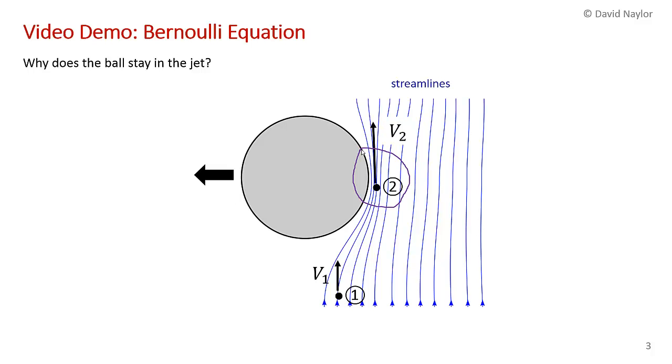In fact, if we consider the velocity in the free stream v1 and the velocity v2 at the side of the ball, if you do the theoretical analysis, and that's in a later chapter in the book, you can show that v2 is about equal to 2 times v1.